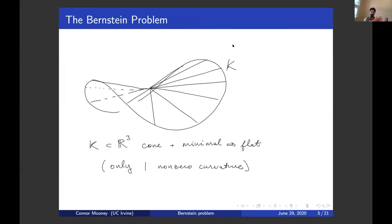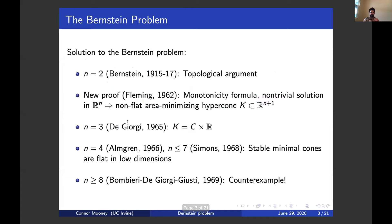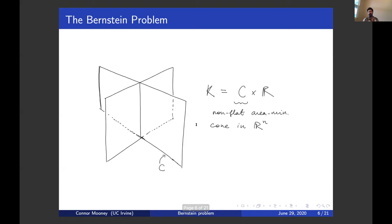From this Fleming could conclude the Bernstein theorem in 2D: if you look at cones in three dimensions, one of the curvatures has to vanish; if one curvature vanishes and it's minimal, the other also vanishes, so the only option is a plane. Then, a few years later, De Giorgi improved this by one dimension higher using a similar idea. He showed that the non-flat area minimizing hypercone that Fleming constructed must have a cylindrical structure — it has to be a cone C in one dimension lower, in Rn cross R.